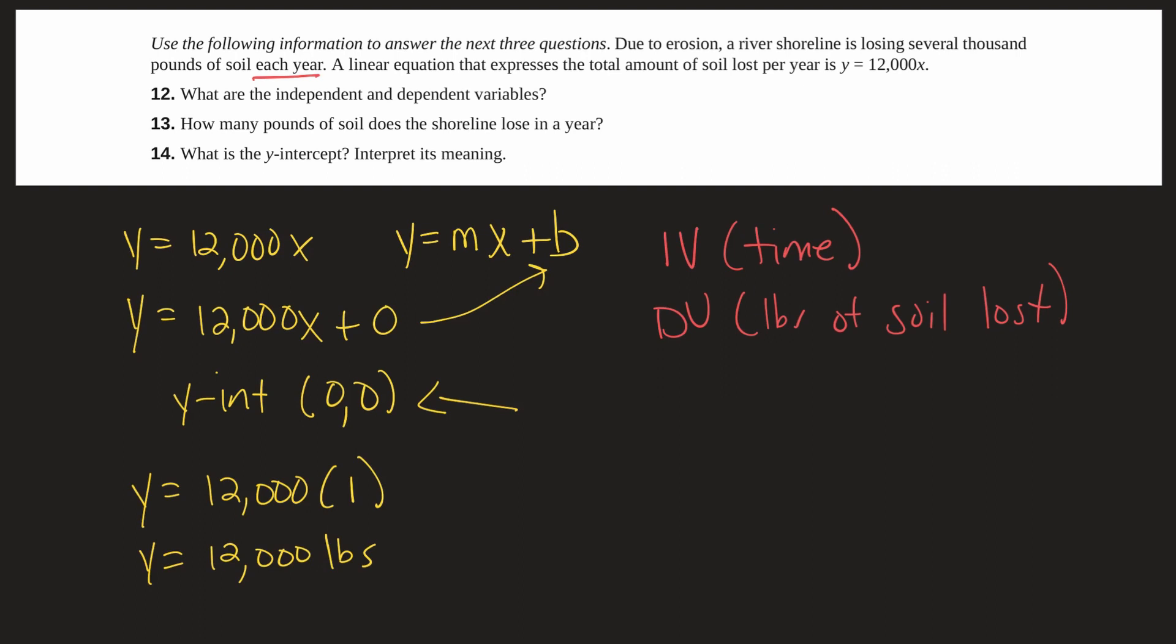And finally because we are saying this is a linear equation wherever we start in time. So from now to next year we'll be 12,000 pounds lost. If we jump forward in time to next year and then say a year from then what will we lose? Well it's still 12,000 pounds. But of course over the course of two years it's 24,000 pounds. So the y intercept of zero just means now.